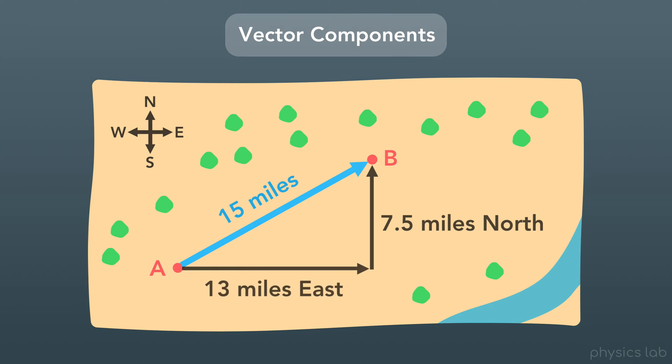So let's say you were lost, and you called someone at point A to come and find you using a compass. You could tell them to travel 13 miles directly east, and then 7.5 miles directly north. And they would take a different path, but they would still end up at point B. So in this example, the 15 miles straight from point A to point B is our displacement vector, and our components are 13 miles east and 7.5 miles north. And you can see how we've created a right triangle.